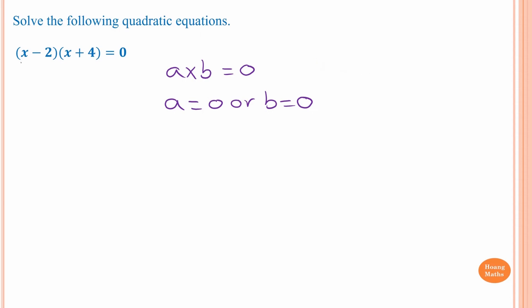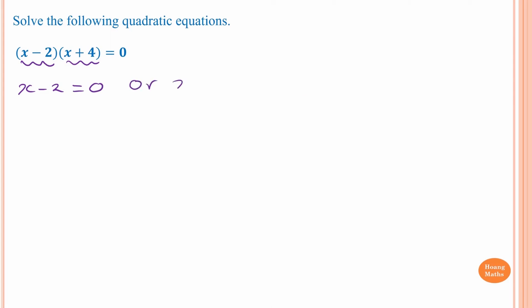So if x minus two and x plus four multiplied together equals zero, this means that either x minus two is equal to zero or x plus four is equal to zero.